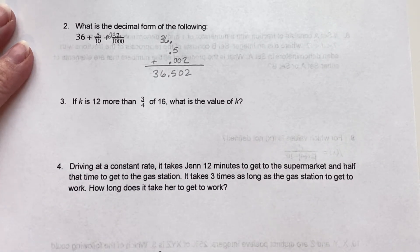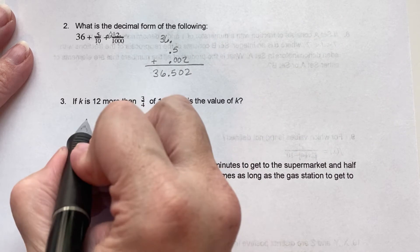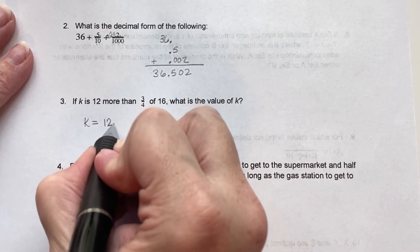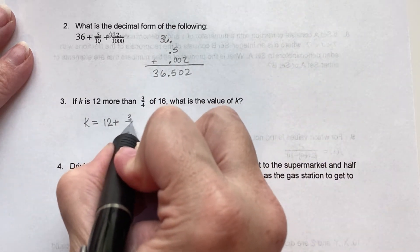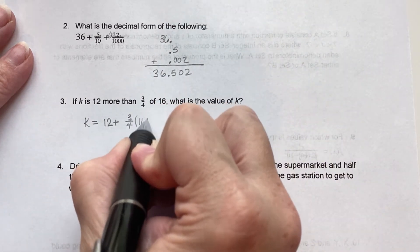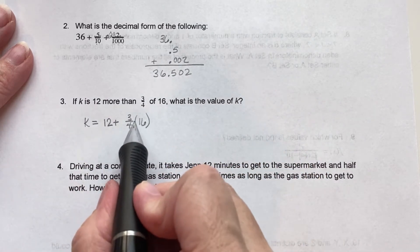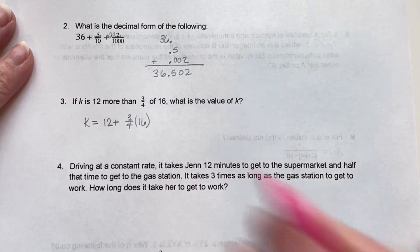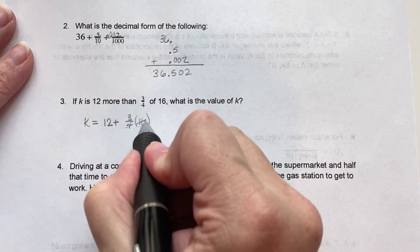If k is 12 more than 3 quarters of 16, what is the value of k? So if k is 12 more, so plus 12 or 12 plus, 3 fourths of 16. Alright, so according to our order of operations, we need to do the multiplication first. So this 16 is over 1. So reduce that.